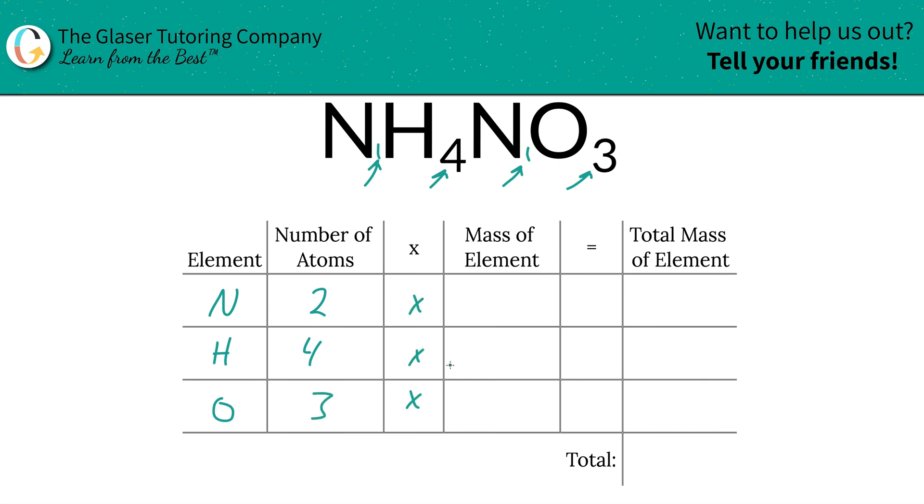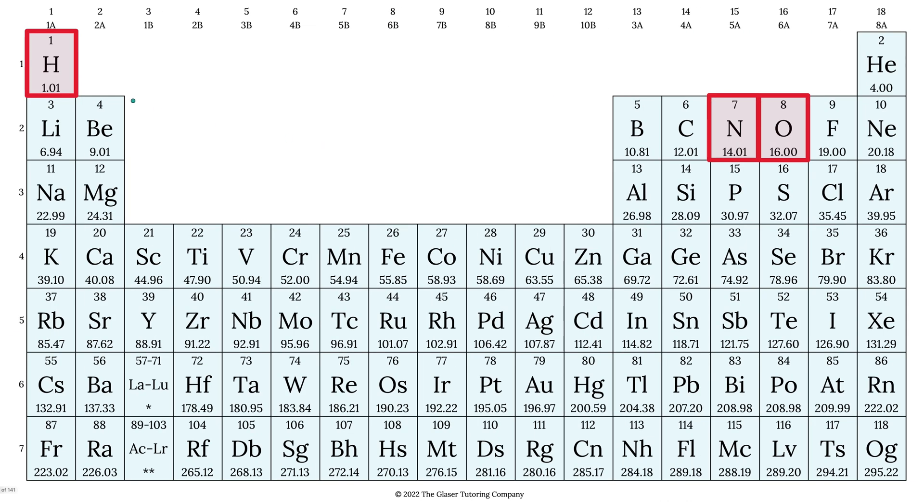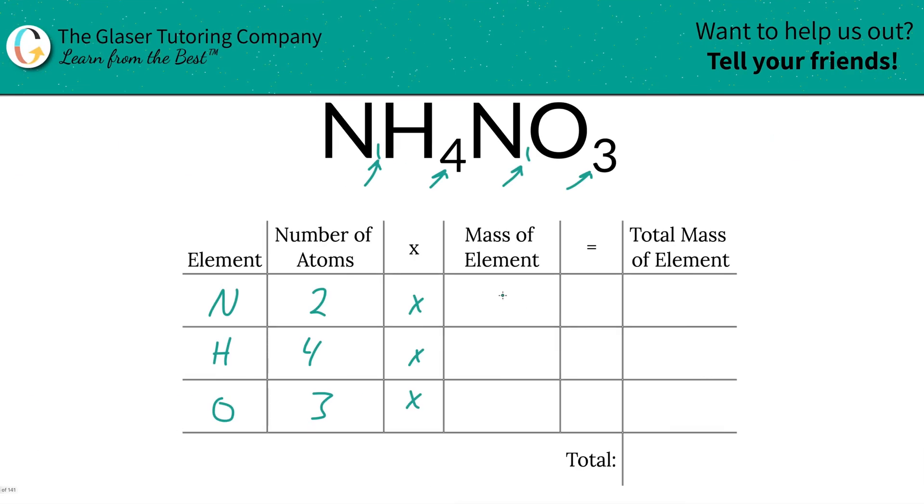Then we're going to multiply those number of atoms by the mass of each element. That's where the periodic table comes into play. Mass of hydrogen is 1.01, nitrogen is 14.01, and oxygen is 16. So we have 14.01, hydrogen is 1.01, and oxygen is 16.